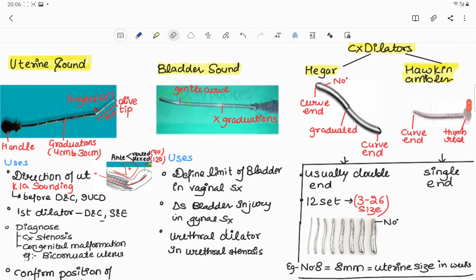We will discuss two types of sound. First is uterine sound. As you can see in this picture, it contains a handle and it is graduated with markings ranging from 4 to 13 cm and it is angulated by 60 degrees and it contains an olive tip.